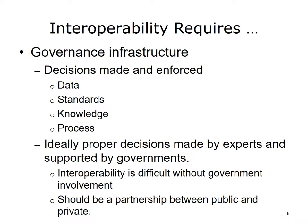Since many parties are involved, there must be some governance infrastructure. Decisions involving standards, knowledge, and process must be made and enforced. Someone has to select the standards and methods that will be used. Decisions necessary for interoperability relate to standards, data, knowledge, and process. Ideally, these decisions will be made by experts who understand the technology and the requirements. At a national level, the government must be involved. The interstate system of roads is a good example of federal, state, and local governments working together.